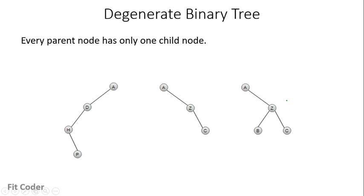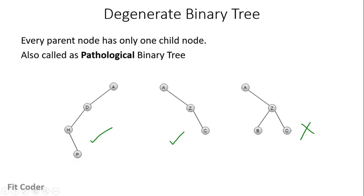Now let's check the next type: degenerate binary tree. In a degenerate binary tree, every parent node has only one child node. In the first tree, all nodes have only one child, so this is a degenerate binary tree. In the second tree, each node also has only one child, so it is also degenerate. In the third tree, node Z has two children, so it is not a degenerate binary tree. This type is also known as a pathological binary tree.